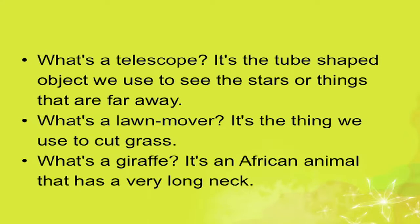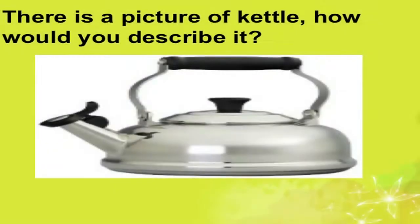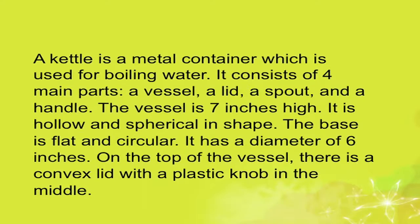For example, there is a picture of a kettle. How would you describe it? A kettle is a metal container used for boiling water. It consists of four main parts: a vessel, a lid, a spout, and a handle. The vessel is seven inches high, hollow and spherical in shape.